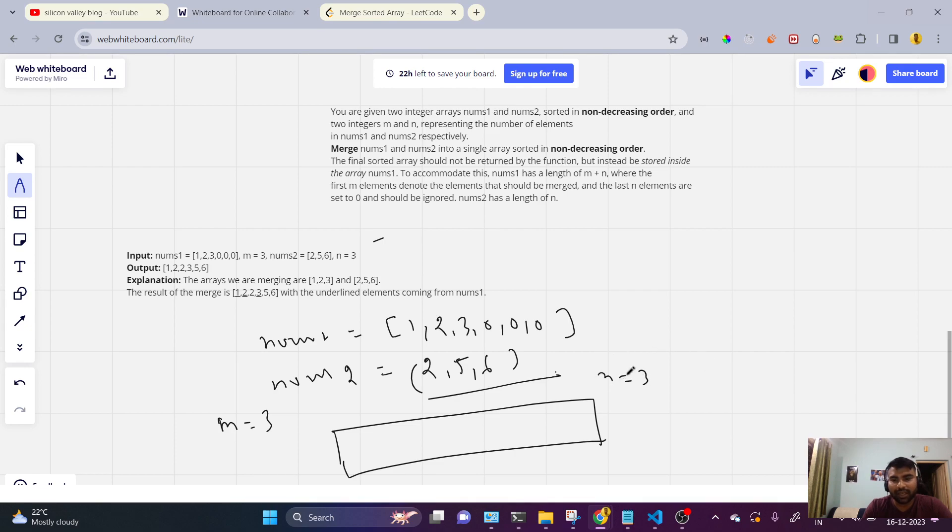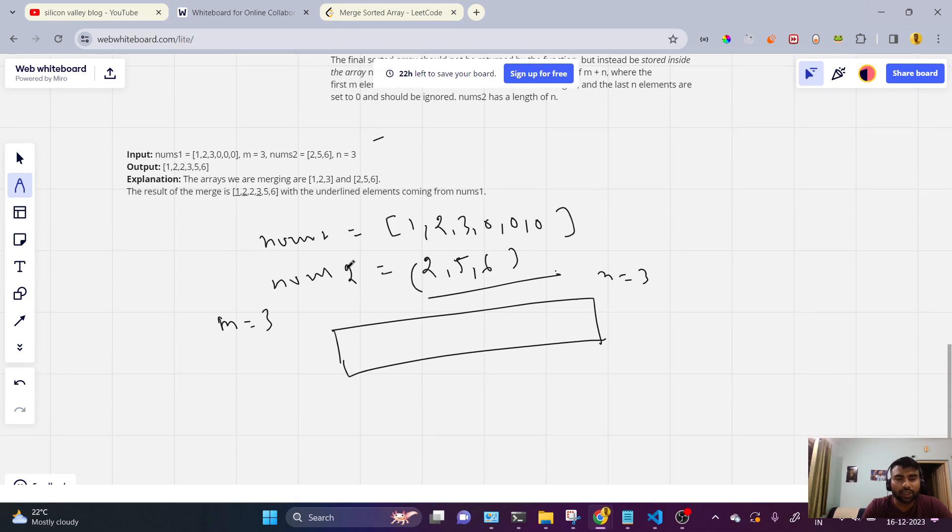m plus n is 3... sorry, how many elements we need in sorted array merge of these two arrays? Then we can say nums1 and nums2 are a single array sorted. The final sorted array should not be returned by the function but instead be stored inside the array nums1. So what is the value of nums1? m plus n.